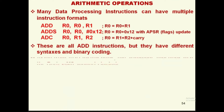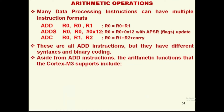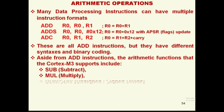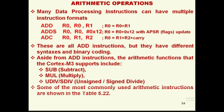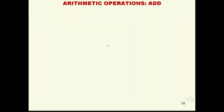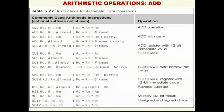The arithmetic functions that the Cortex M4 supports include addition, subtraction, multiplication, unsigned division, and signed division. Some of the most commonly used arithmetic instructions are shown in Table 5.22, where we can see the instructions for arithmetic data operations.